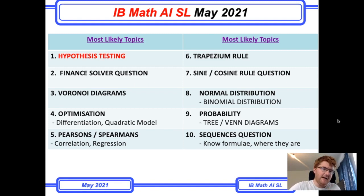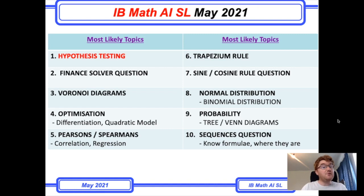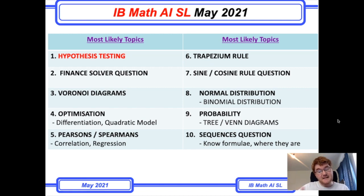Number one is hypothesis testing — this covers a fairly broad range including chi-square testing and t-testing, for example independence and goodness of fit. You need to know the standard steps for a hypothesis test. At standard level, focus on the p-value and know what the p-value and the significance level mean in terms of accepting or rejecting H₀.